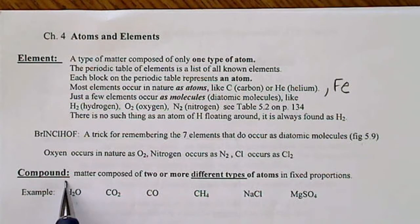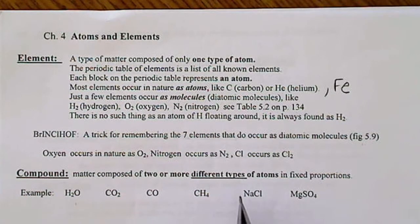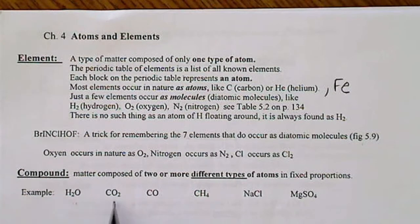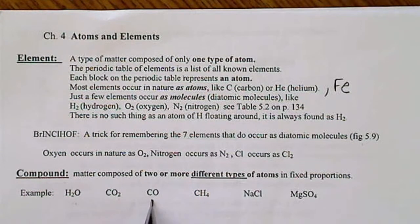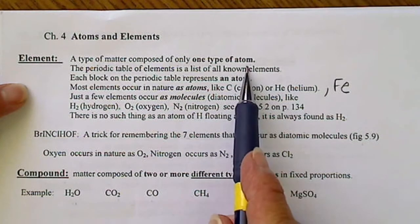So a compound is two or more different types of atoms. So we know this is water, this is carbon dioxide, this is carbon monoxide. So not all elements occur as atoms.